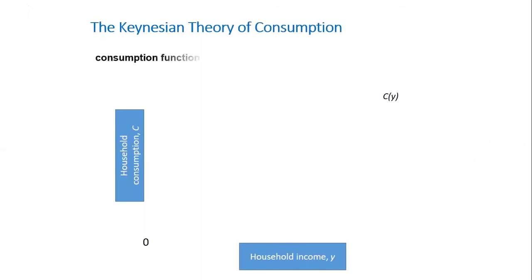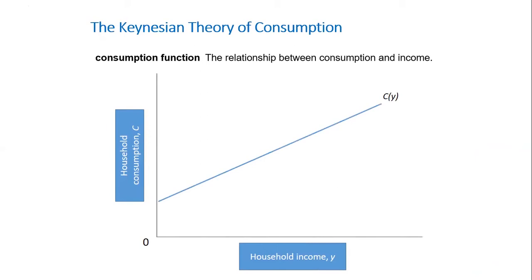The consumption function or Keynesian consumption function is an economic formula that represents the functional relationship between total consumption and gross national income. It was introduced by British economist John Maynard Keynes, who argued the function could be used to track and predict total aggregate consumption. A consumption function for an individual household shows the level of consumption at each level of household income.